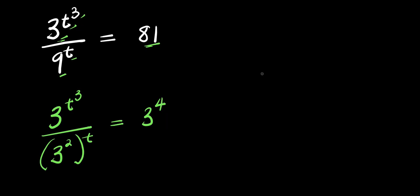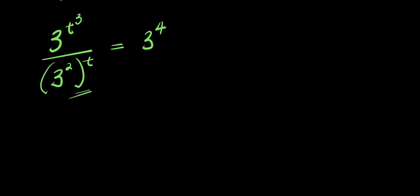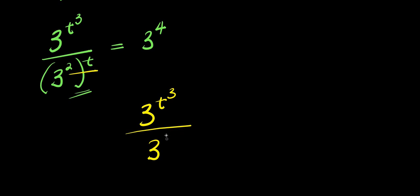So from here, if you have a to the power m, all to the power n, that equals a to the power n times m. So we apply this right here. That means we are going to have 3 to the power of t cubed, divided by 3 to the power of 2 times t, that is 2t, and this equals 3 to the power of 4.